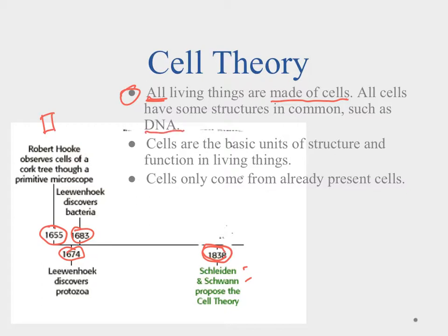The second part of cell theory is that cells are the basic units of structure and function in all living things. For something to be alive, it must be made up of cells — either a single-celled or multi-celled organism. The third part, from Virchow, is that cells only come from pre-existing cells. They can't spontaneously appear; they come from other cells. That's our cell theory and the foundation of biology.